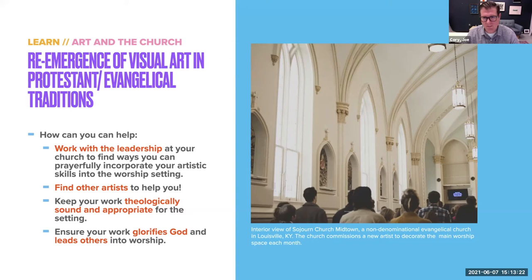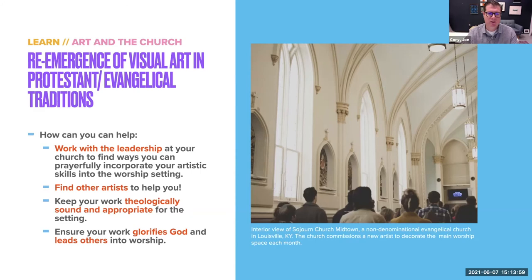This is a view of a church that a friend of mine works at in Louisville, Kentucky, called Sojourn Church Midtown. In their sanctuary, they have little spots next to the windows, and they invite artists each month to put work into those spots. So every month there's something new — some cool design, sculpture, painting, or something meant to be in those spaces. Usually the work goes along with the theme the pastor is preaching on. So there's a really nice way for the congregation to hear the Word, but then look around and contemplate the imagery around them during the service. Okay, it's time for another two-minute pause. I want you to take two minutes and reflect: which tradition does your church mostly align with — Catholic, Protestant, Evangelical, Orthodox? Then engage — take a moment and picture your home sanctuary. What does that look like? Make a list of the visual elements present, and how do those elements help you grow closer to God?